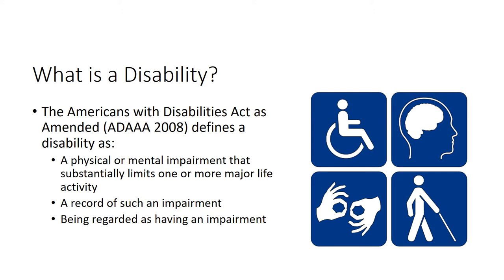In order for a student to be eligible for accommodations because of a disability, the disability has to limit a major life activity like breathing, walking, talking, hearing, seeing, eating, learning, reading, concentrating, or thinking. However, even if a student uses auxiliary aids, like a sign language interpreter, or takes medication, they can still be considered a person with a disability because the major life activity is still affected. The only exception is if a student has full vision while wearing glasses or using corrective lenses — then that student is not considered disabled.